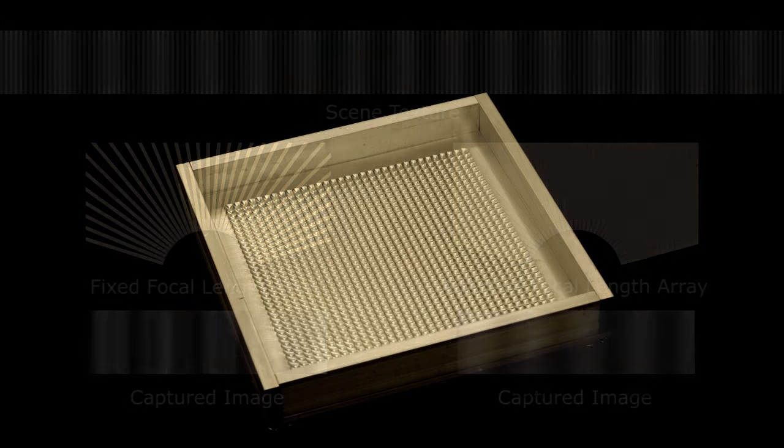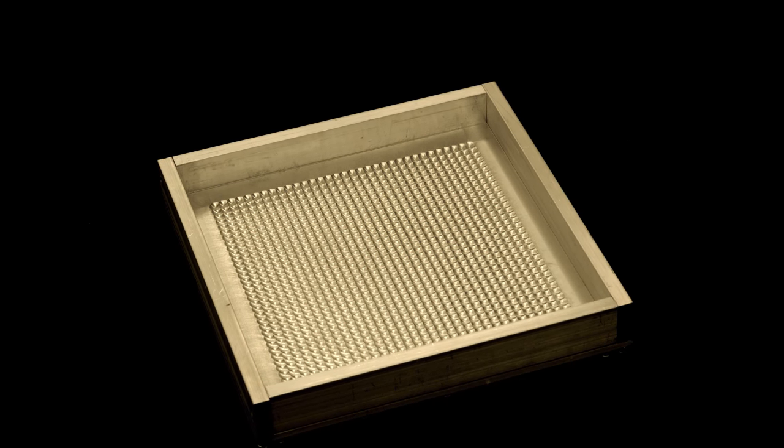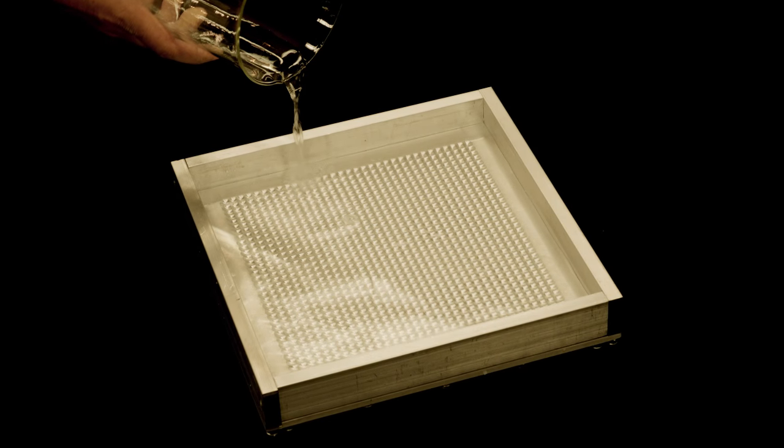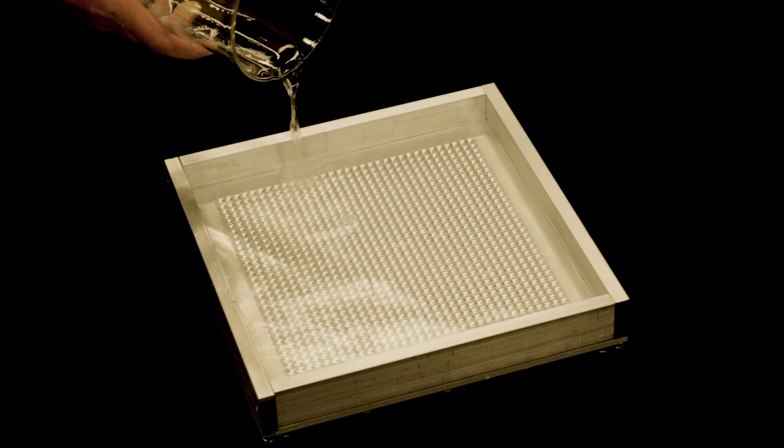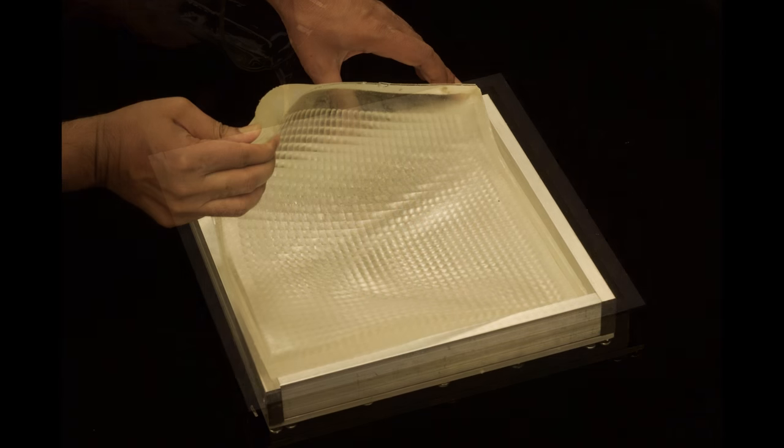To prototype the sheet camera, we machined an aluminum mold for a 33x33 lens array. We poured silicone rubber with the appropriate material properties in the mold. The silicone rubber is cured in an oven and then peeled off the mold.